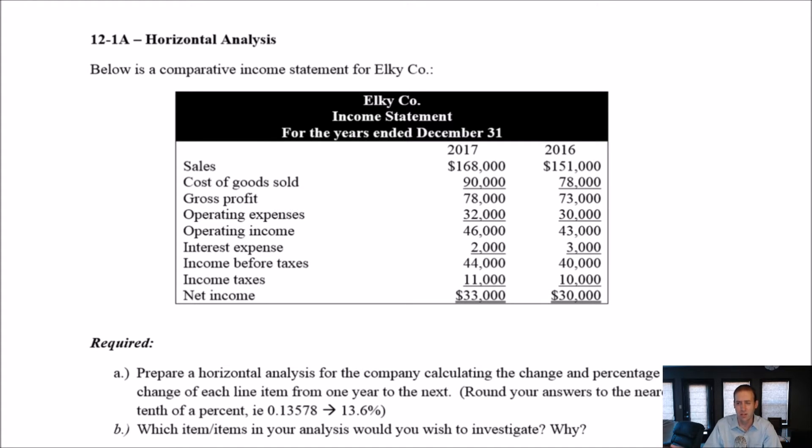So it's actually a very straightforward analysis. There's a few ways to do horizontal analysis. You can compute trend percentage, but I'm looking for just change from one year to the next. So what we're going to do here, it says, prepare a horizontal analysis for the company, calculating a change and percentage change of each line item from one year to the next. So we'll make a new column here called change and one more column called percentage change.